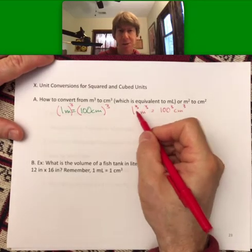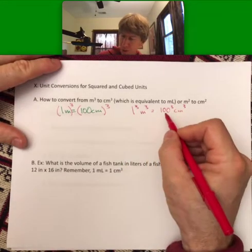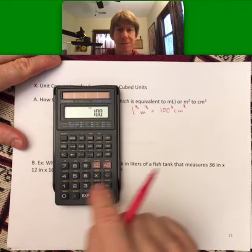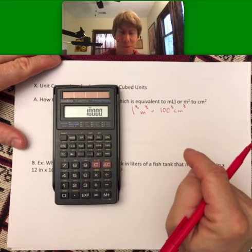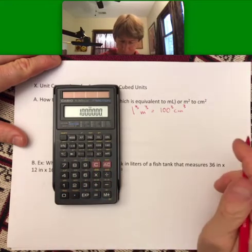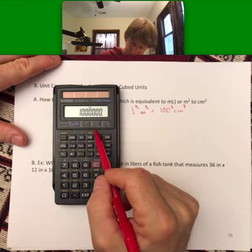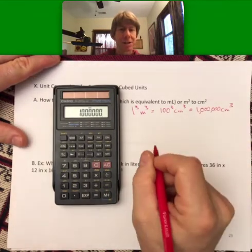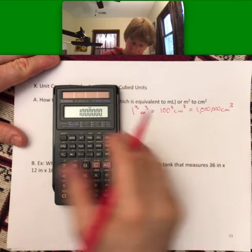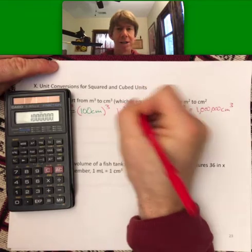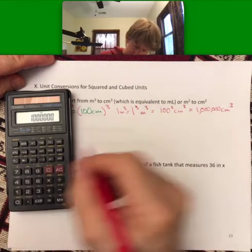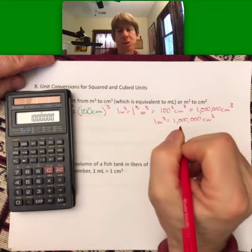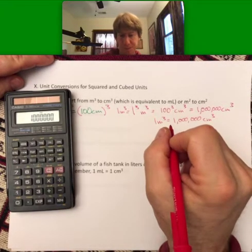One cubed is just still one, and 100 cubed, well when in doubt pull out your trusty calculator: 100 times 100 times 100, and I get one million. So one million centimeters cubed is equal to one meter cubed, because one times one times one is still just one. So writing this all together...